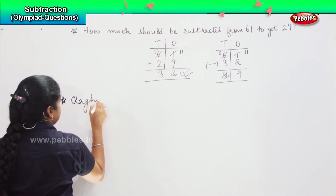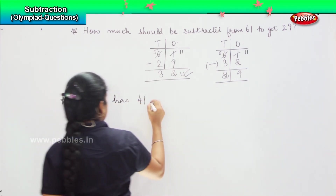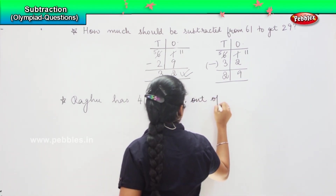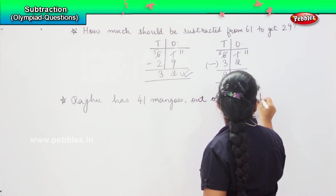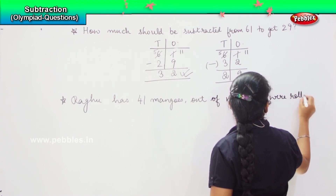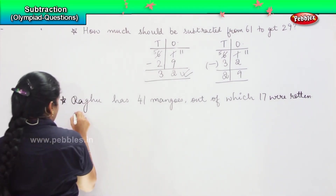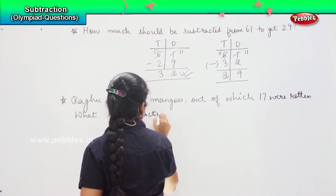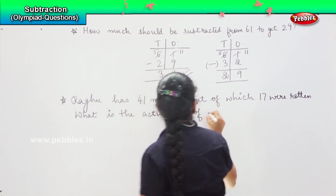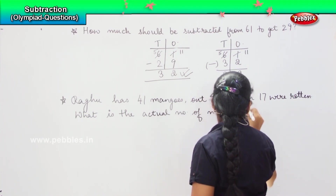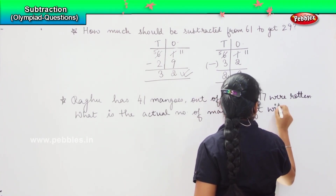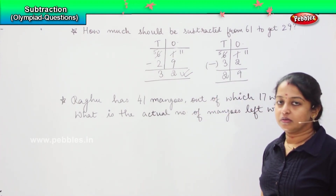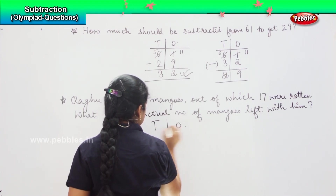Coming to the next question: Raghu had 41 mangoes, out of which 17 were rotten. What is the actual number of mangoes left with him? So, Raghu is having 41 mangoes in which 17 were rotten. What you have to do is tens, ones.